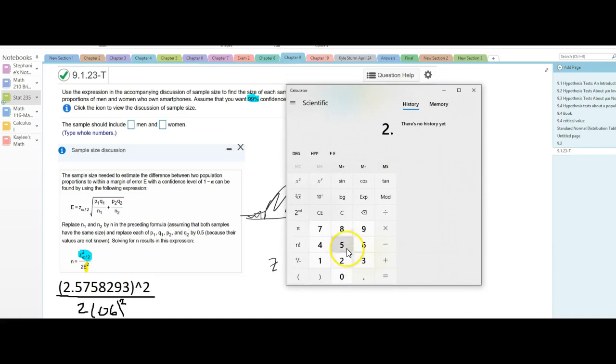So I have 2.5758293. I'm going to square that. And then I'm going to divide by 2 times 0.06 times 0.06 because this calculator kind of sucks, so I'm going to have to put it in that way. And then I get enter. And that's going to give me 921.5, so I'm going to put 922.